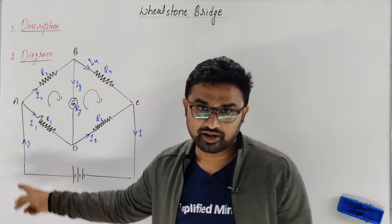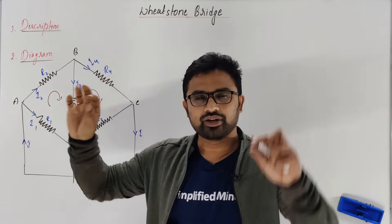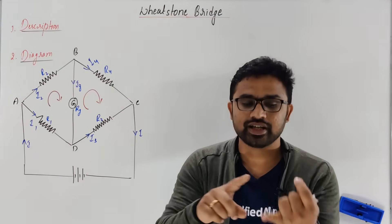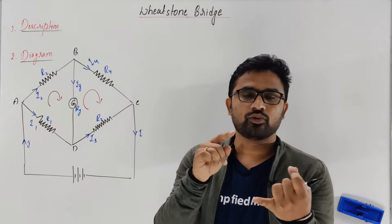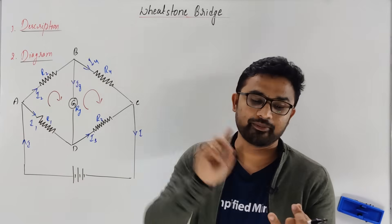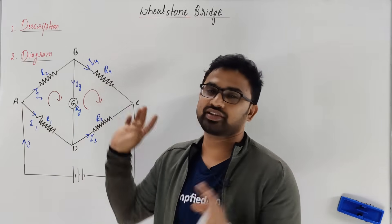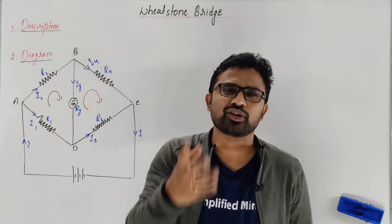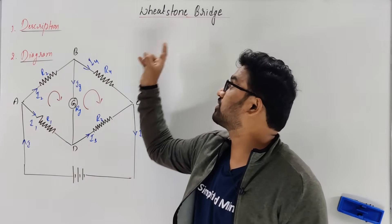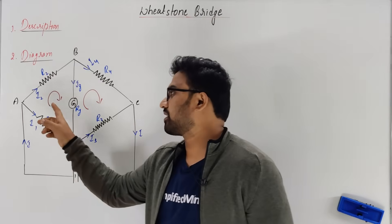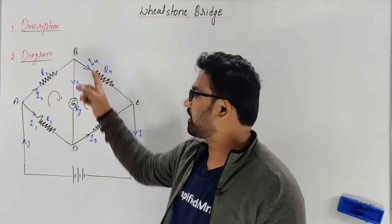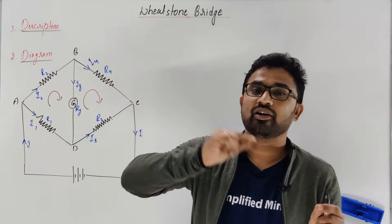That is called the battery arm. Imagine it as a quadrilateral — in one pair of diagonals, we connect the battery (battery arm); in the other pair of diagonals, we connect the galvanometer (galvanometer arm). You have to use these keywords in your description. Four resistors are connected in the Wheatstone Bridge network as shown in the figure.